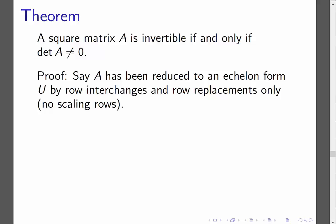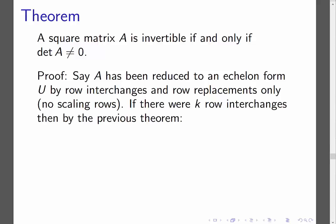We'll always be able to get it into an echelon form without doing that. And so what that means is, from the previous proof, is that if we interchange the row k times, then the determinant of A would be negative 1 to the k, because each one of those k row interchanges multiplied the determinant by negative 1, multiplied by the determinant of U. Recall from the previous proof that a row replacement does not affect the determinant.